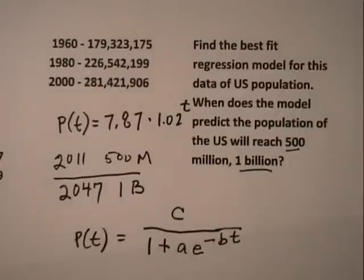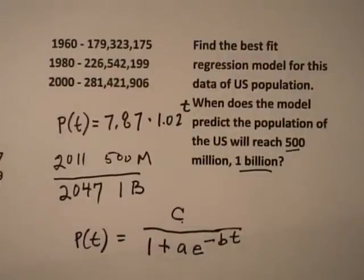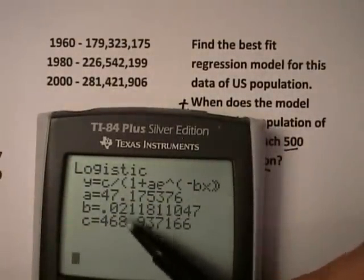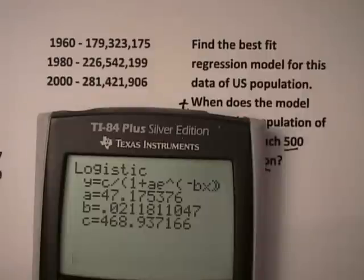So that's the form, and you notice that we need to know three things: c, a, and b. And that's what we do. We know c, a, and b here. So that's the logistic model.